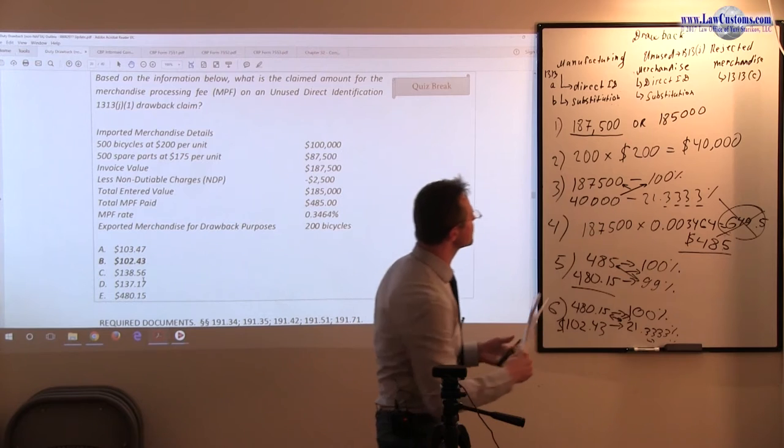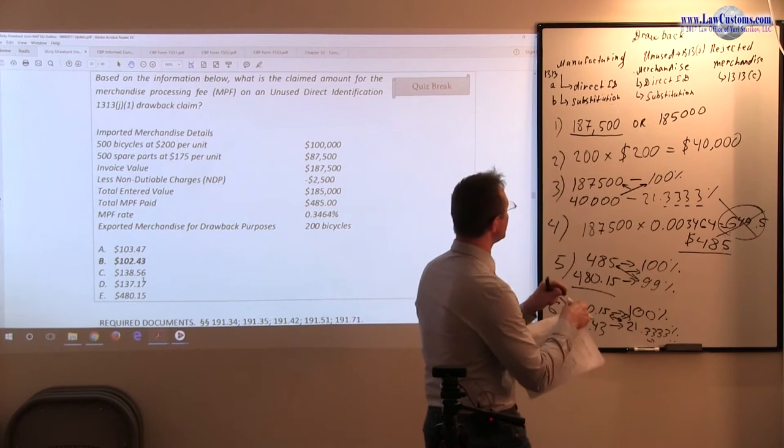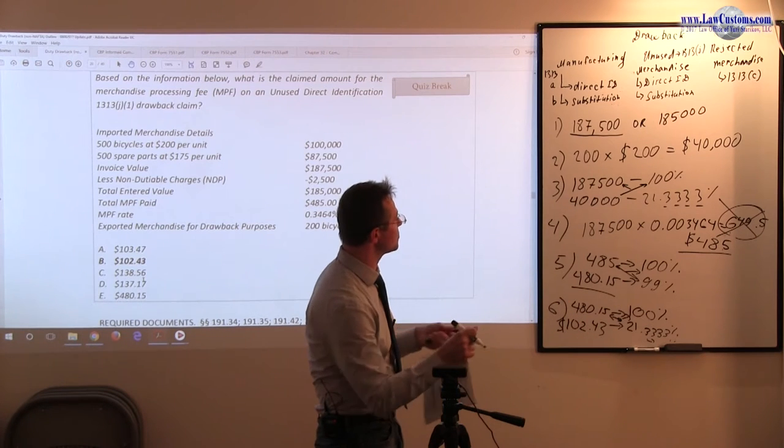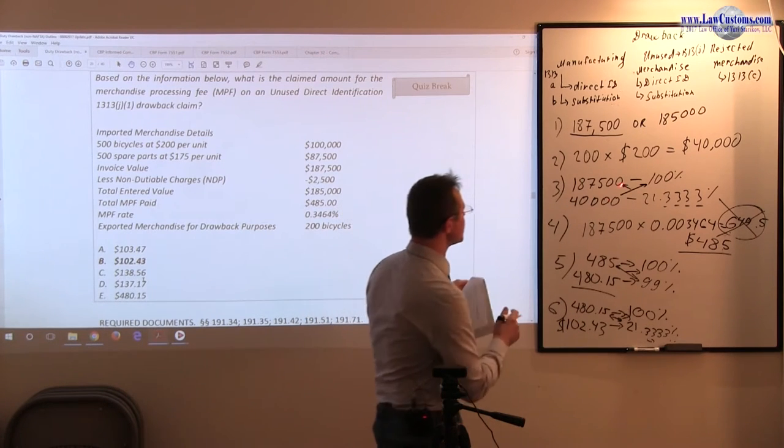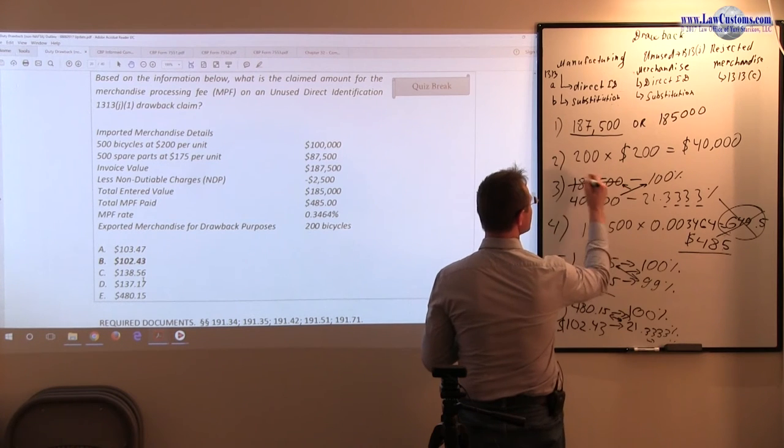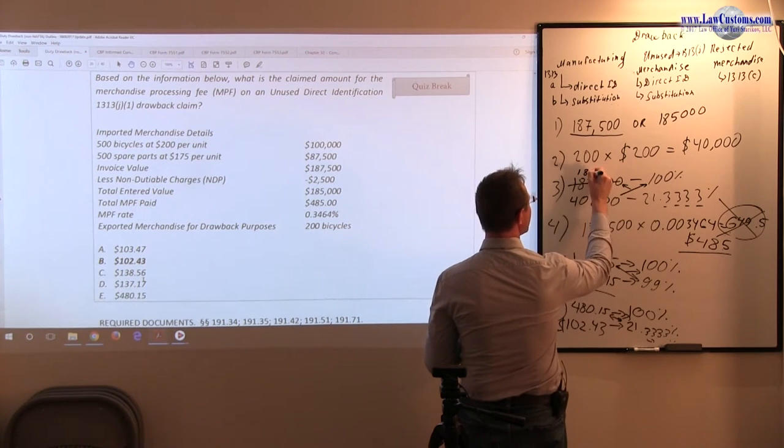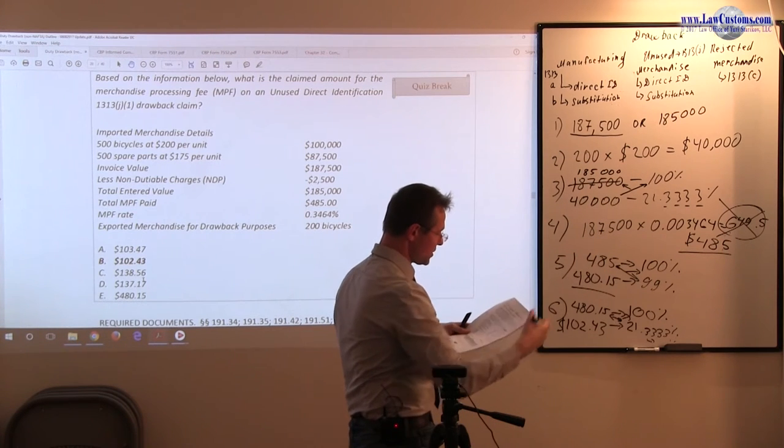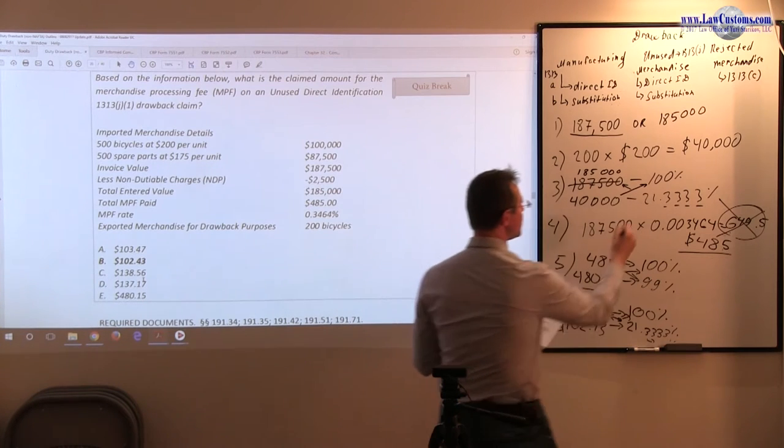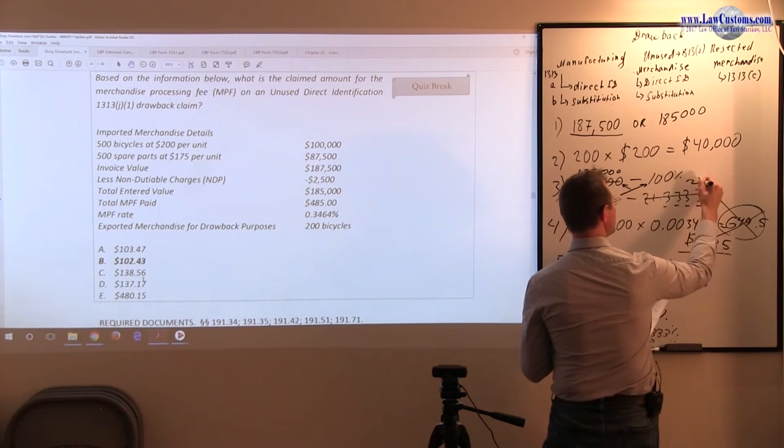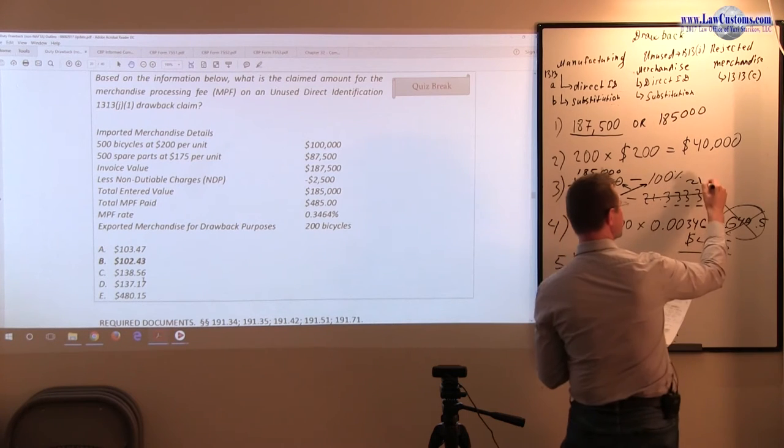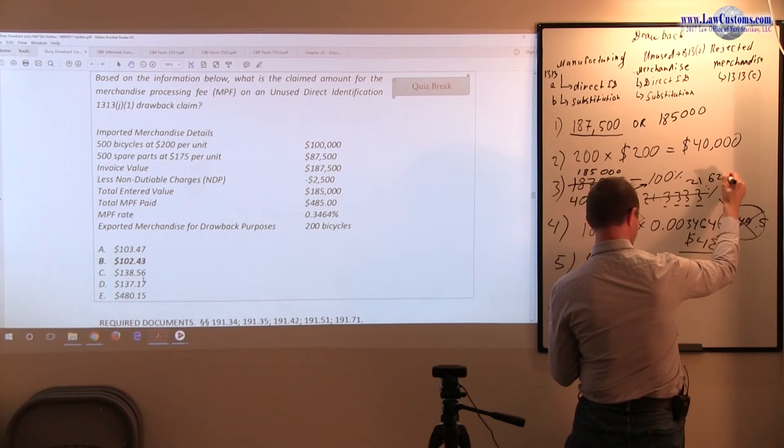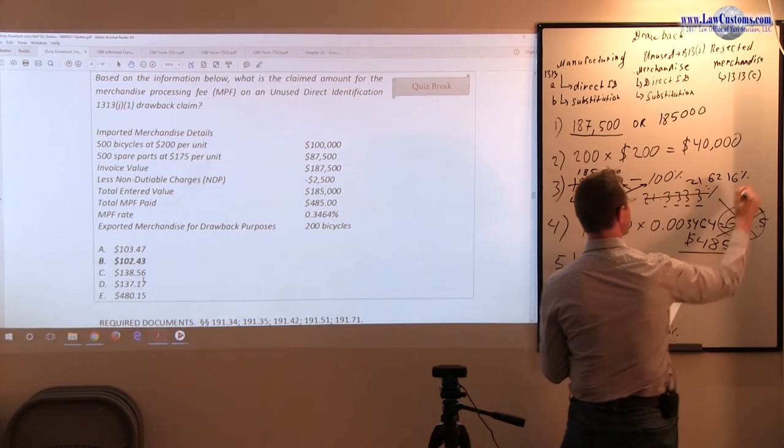Here, instead of this value, you will take 185. So 185 portion would be affected over here. If you replace 187 with 185,000, then your percentage would change to something like 21.6216, again, rounding to the nearest four, 21.6216%.